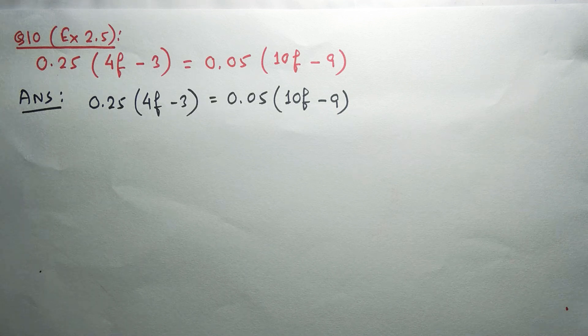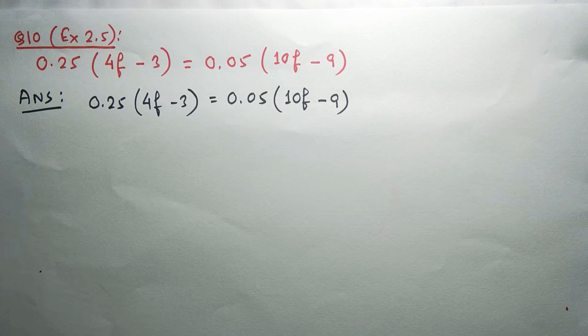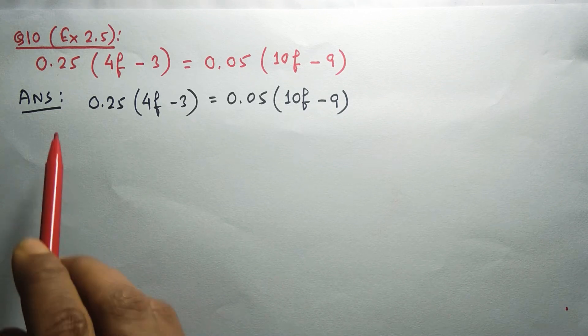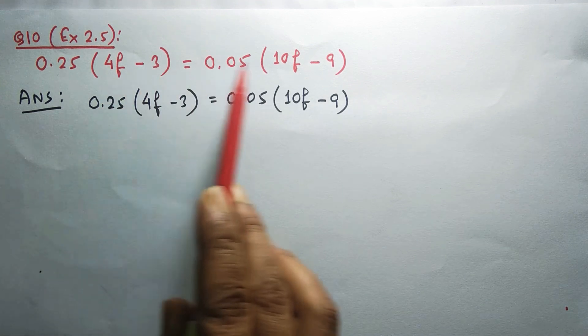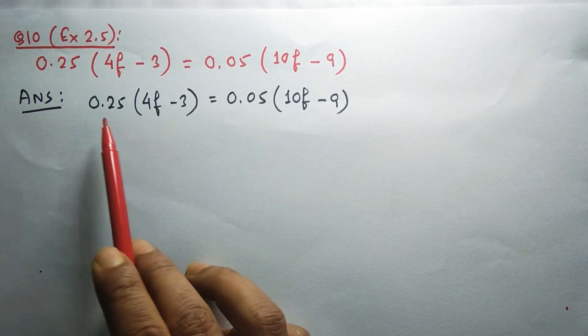Exercise 2.5. The question is to simplify and solve for the unknown variable f. We have the left hand and right hand side, and in both sides we have the variable f.